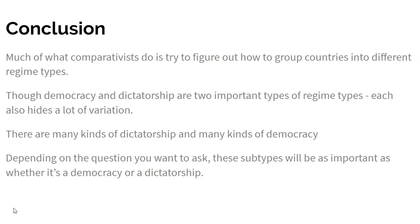In conclusion, comparative political scientists try to figure out how to group countries into different regime types, and there's a lot of discussion about the best way to classify countries. Democracy and dictatorship are two important types of regimes, but each hides a lot of variation — what kind of democracy, what kind of dictatorship? Are you a communist dictatorship, a fascist dictatorship, a modernizing authoritarian dictatorship? And as we'll see in coming weeks, there are also many shades of democracy. Depending on the question you want to ask, the subtypes — the type of democracy and type of dictatorship — are going to matter almost as much as whether it's a democracy or dictatorship in the first place.